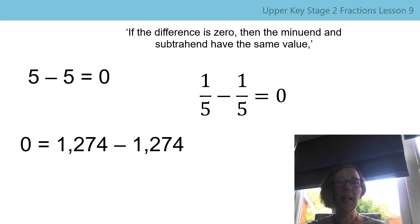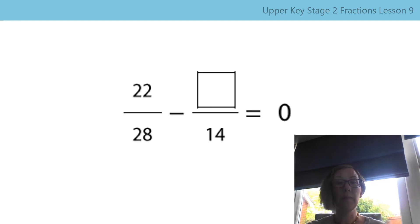So this is the stem sentence that was introduced to you last time by Mrs Parry. The difference is 0, then the minuend and the subtrahend have the same value. Have you remembered which is which? In any calculation where there is a subtraction, the first number is the minuend and the second number is the subtrahend. So you can see that this stem sentence matches up with what we've just talked about.